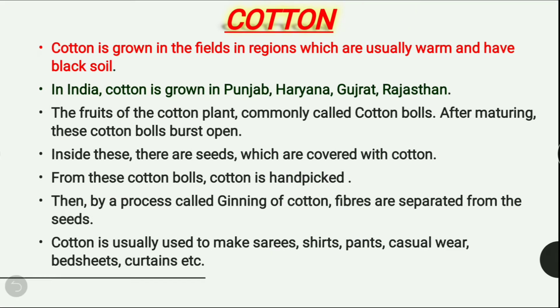Cotton is grown in the field in regions which are usually warm and have black soil. In India, cotton is grown in Punjab, Haryana, Gujarat, and Rajasthan. The fruit of the cotton plant is commonly called cotton balls.